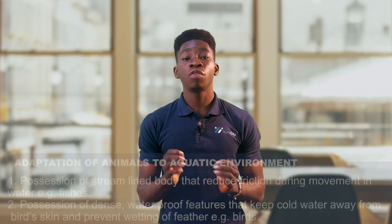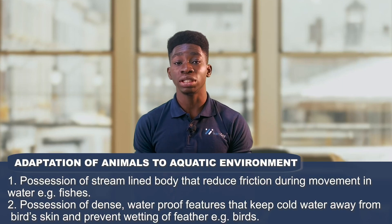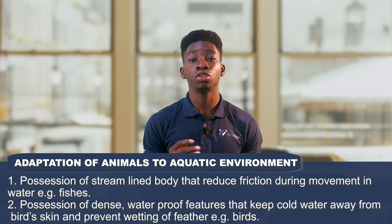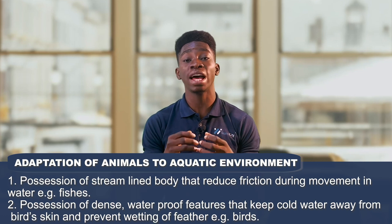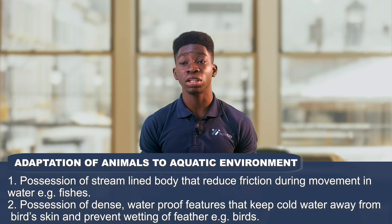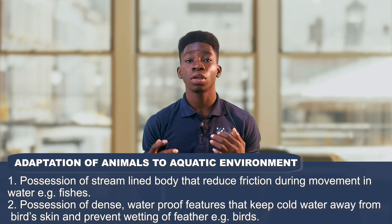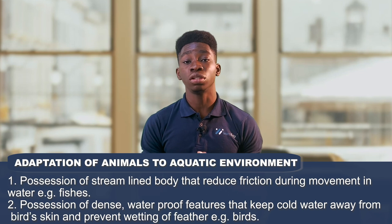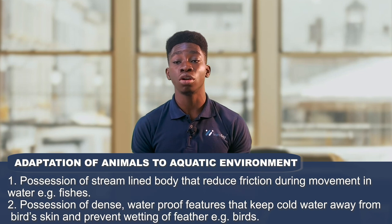Now let's discuss the adaptations of animals and plants in various habitats, starting with animals in aquatic habitats. The first adaptation is the possession of a streamlined body that reduces friction during movement. For example, fishes have a streamlined body that reduces friction when moving through water.